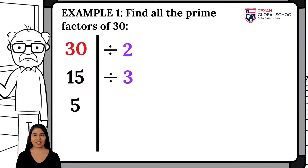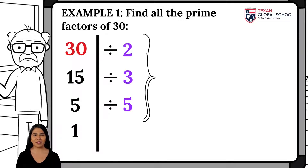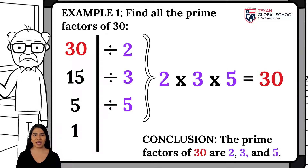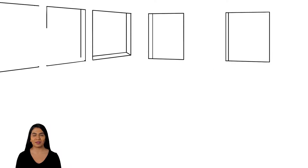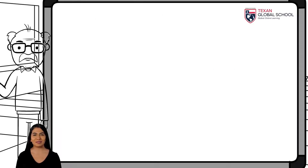Hence, 15 is divisible by 3. We write the 3 and divide, obtaining 5. Finally, a number is divisible by 5 if it ends in 0 or 5. Thus, the last prime factor is 5. We conclude that the prime factors of 30 are 2, 3, and 5, because their product results in 30.